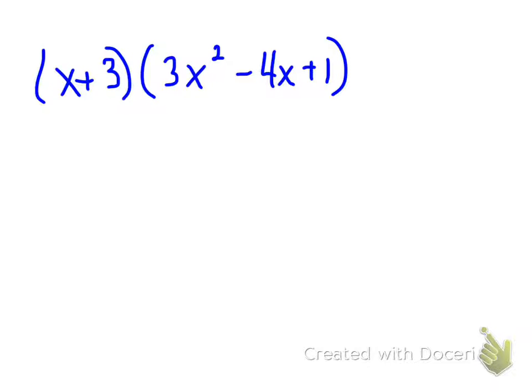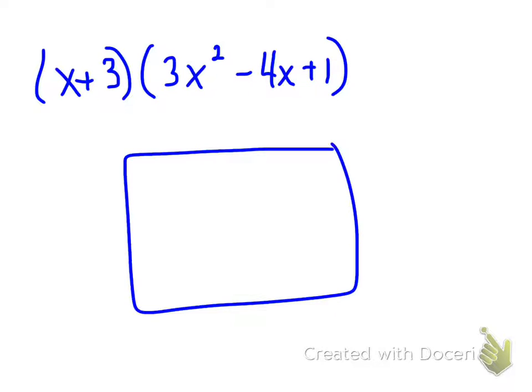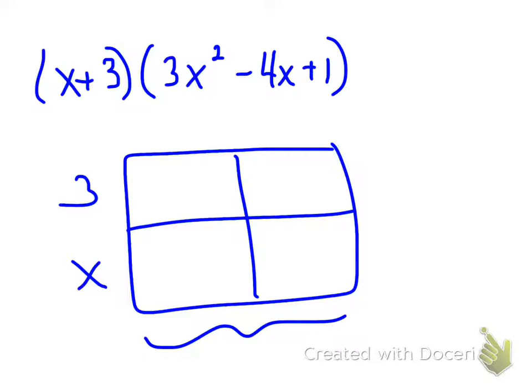So before, we've used generic rectangles to multiply this out, and we're going to use the same idea now. The only difference is that when we're dealing with a trinomial, instead of making a generic rectangle that looks like this, where we have x plus 3 on one side, this part here we can't have because we have three terms. So what we're going to do is instead of having it look like this, we'll just divide it into three different parts.